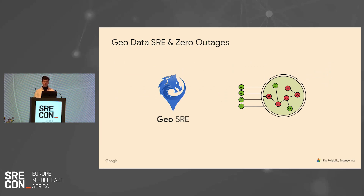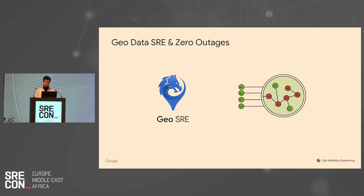Let me share a little bit more about myself. Within Google Maps SRE, I work on a team called GeoData SRE. We're essentially in charge of all of the systems that ingest, process, curate, and then store the data that powers Google Maps. Within GeoData SRE, I lead a program called Zero Outages, and the goal for this program is to categorically eliminate all major serving outages stemming from back ends that we're on call for.